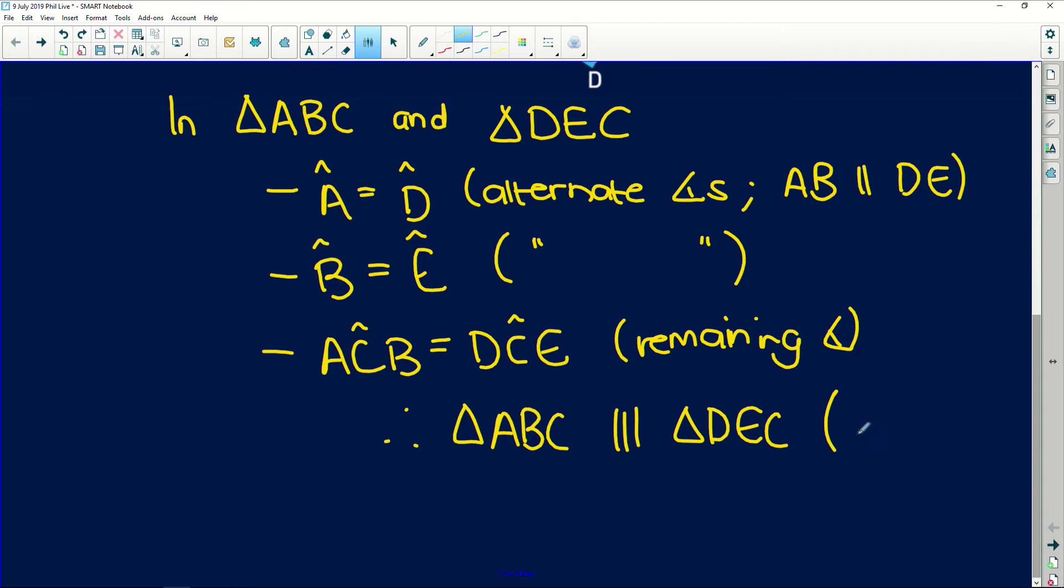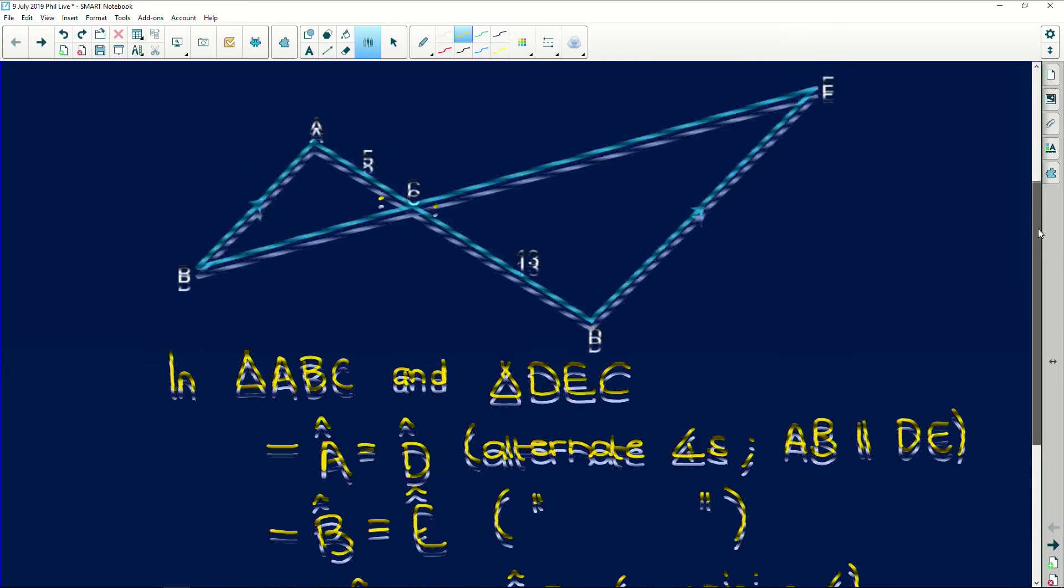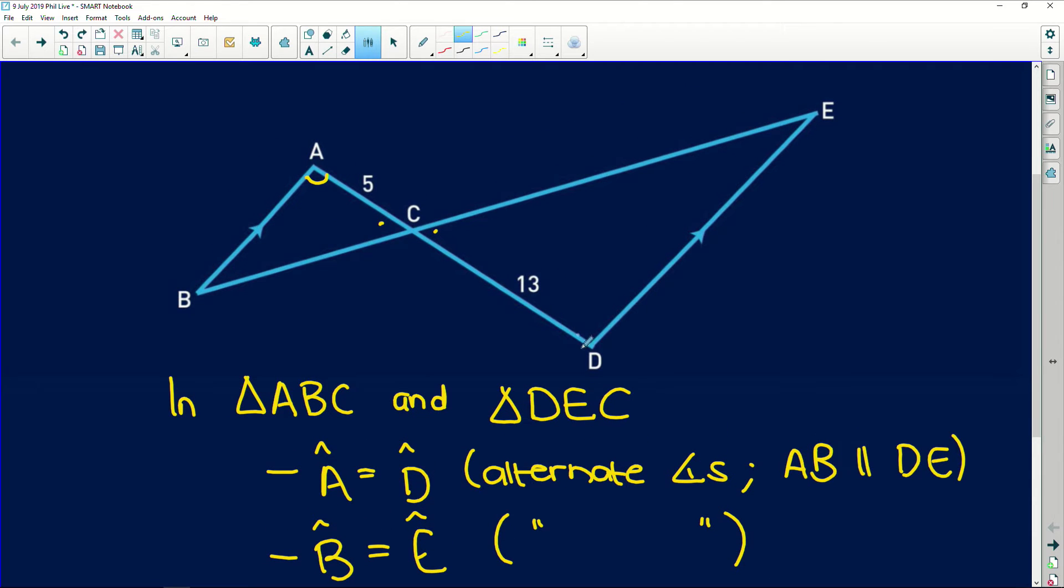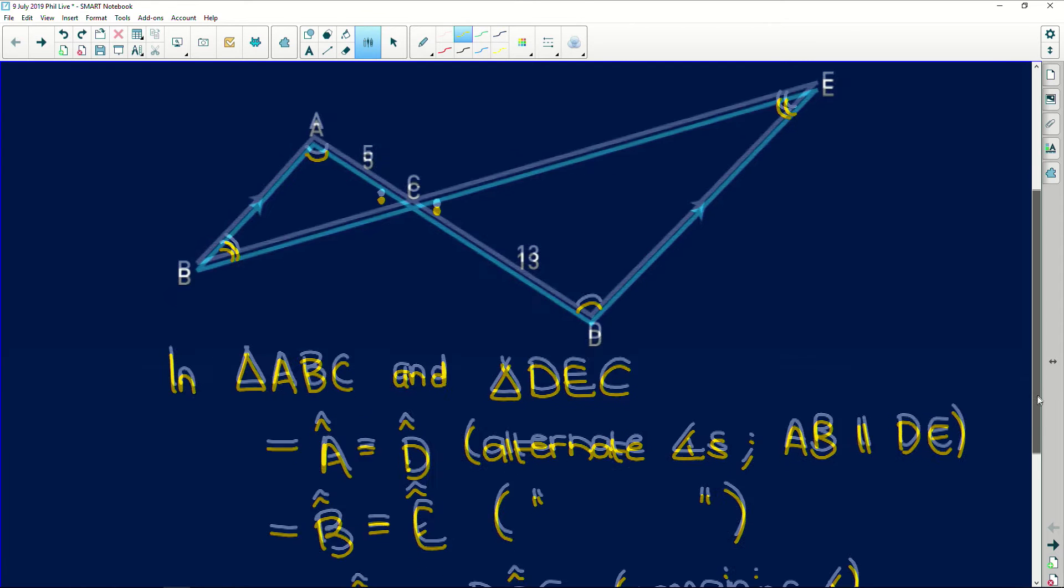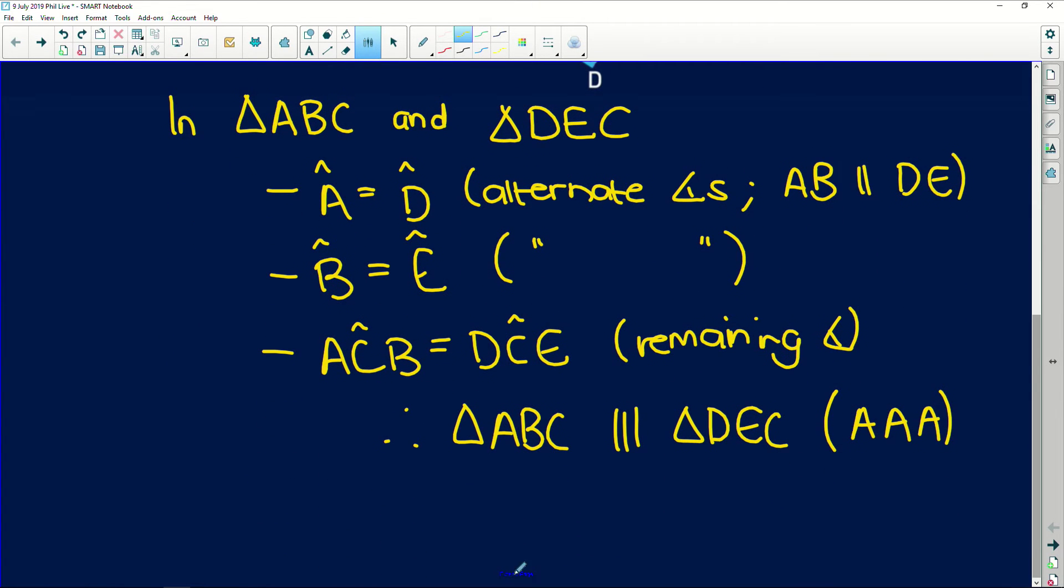And remember, you must give a reason. This reason is angle, angle, angle. They are equiangular triangles. Okay, with A equal to D, B equal to E, and these angles here are equal to each other. Okay, so now what you can say, remember in similar triangles, if you have the ratio of the sides...